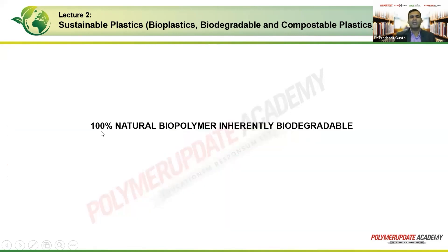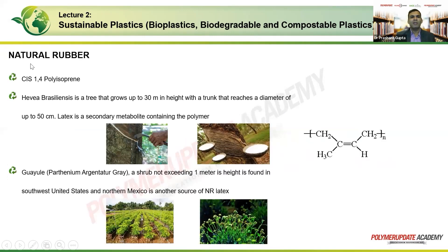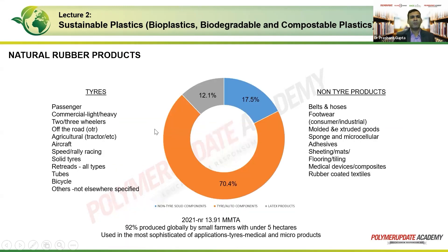Looking at 100% natural biopolymers that are inherently biodegradable: the first is natural rubber, which is the cis form of 1,4-polyisoprene, where both CH₂ groups are on the same side, as opposed to the trans form. The primary tree source is Hevea brasiliensis, but recent research has identified a shrub growing in the southwest United States and northern Mexico — reaching up to one meter in height — as another source of natural rubber latex.